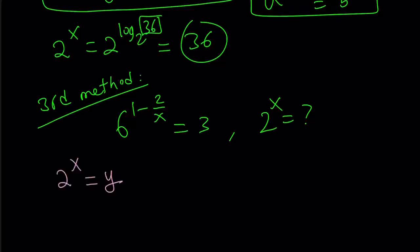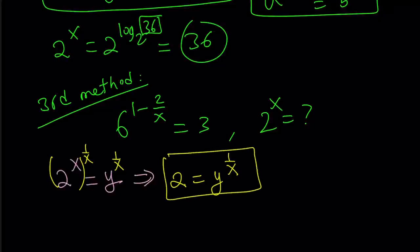And you're like, why? Okay. So from here, we can raise both sides to the power 1 over x. And then, this becomes 2 equals y to the power 1 over x. Now, why do I need that, right? I'm going to replace 2 with that in my expression.